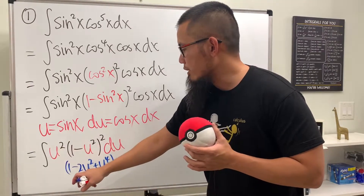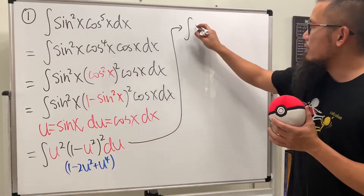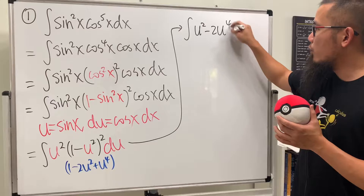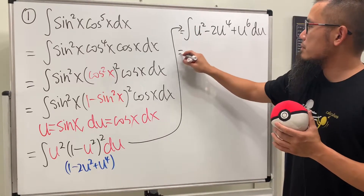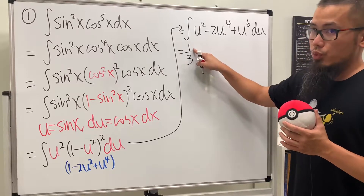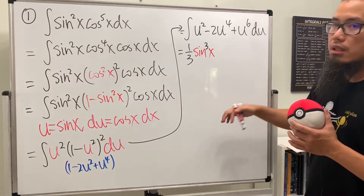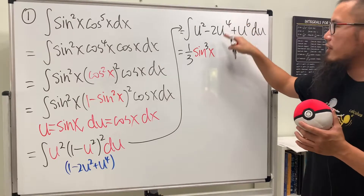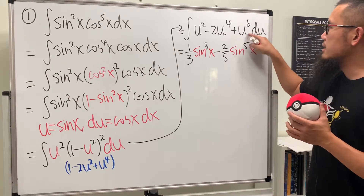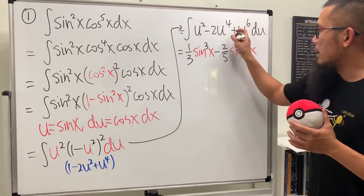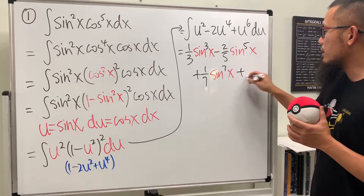We have the u squared in the front, so distributing that inside gives us the integral of u squared minus 2u to the fourth power plus u to the sixth power, du. Now we can just integrate this. This gives us one third u cubed, but u is sine x, so we write one third sine cubed x. Then add one to the power divided by it: minus two-fifths sine to the fifth power x. Lastly, plus one-seventh sine to the seventh power x.